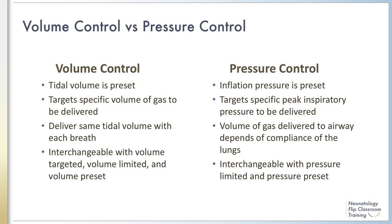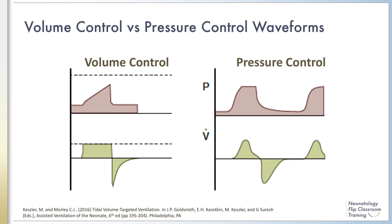In volume control ventilation, tidal volume delivered is directly controlled and pressure becomes the dependent variable. Pressure is delivered in a shark's fin waveform, indicating that the pressure is passive and rises more slowly than is seen in pressure control. The delivery of the maximum pressure occurs at the end of inspiration in volume control ventilation.